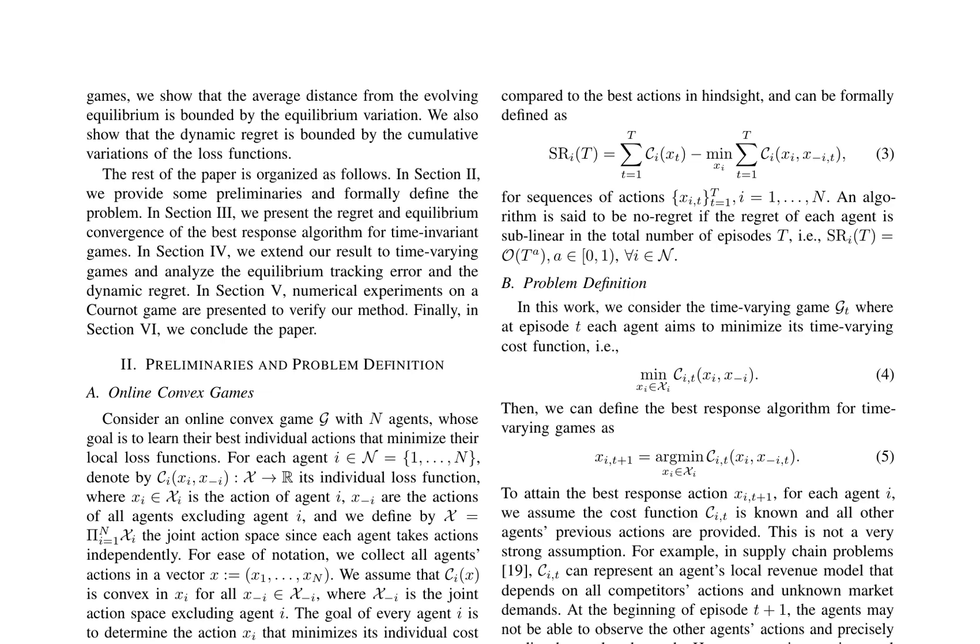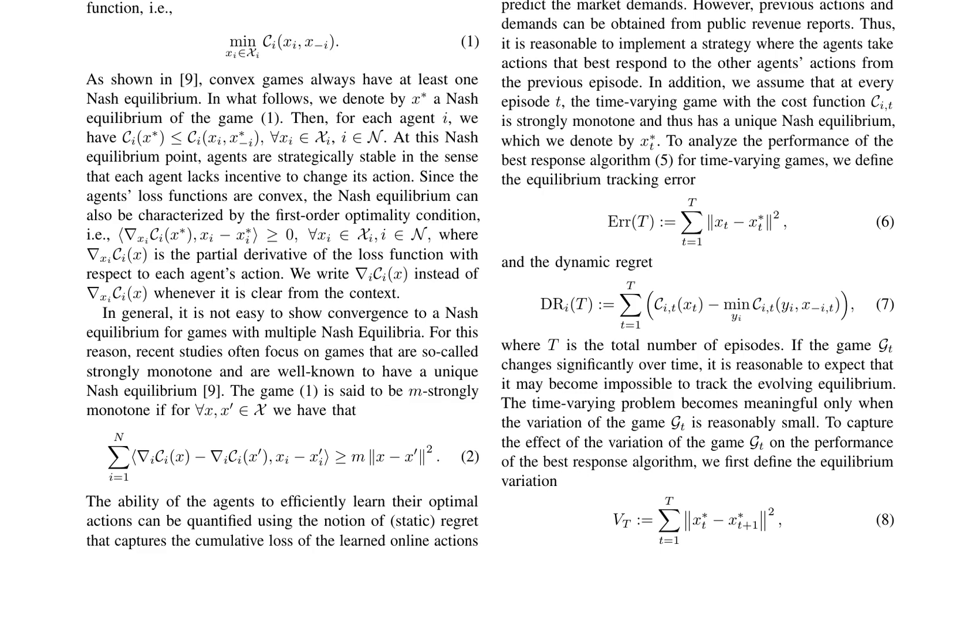The problem of learning in time-varying games is defined, where each agent aims to minimize its local cost function at each episode. The best-response algorithm is proposed, involving agents taking actions that best respond to the other agents' actions from the previous episode. Performance is analyzed through equilibrium tracking error and dynamic regret. The equilibrium tracking error measures the cumulative distance between observed actions and the Nash equilibrium over time, while dynamic regret quantifies the cumulative loss of learned online actions compared to the best actions in hindsight. The concept of equilibrium variation captures the effect of game variation on the best-response algorithm's performance.